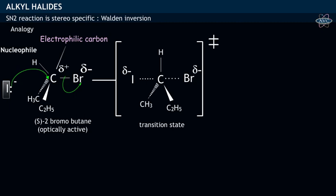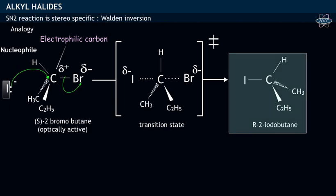With the departure of bromine, the transition state is transformed into a substituted product, R-2-iodobutane, along with bromide ion under SN2 conditions.